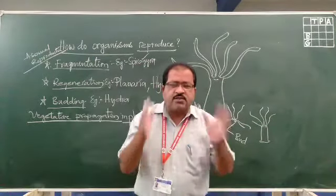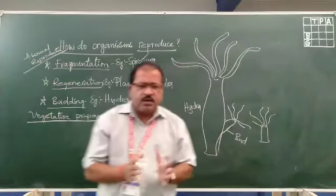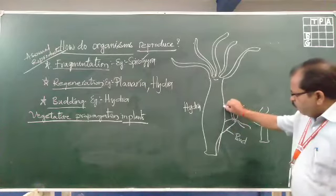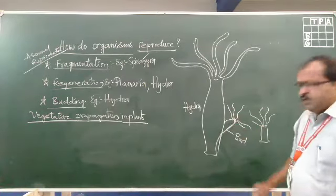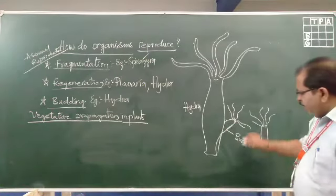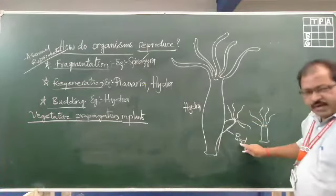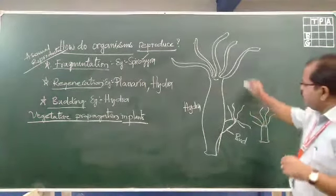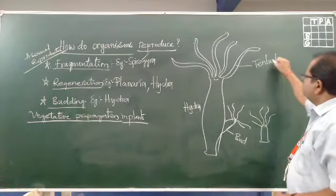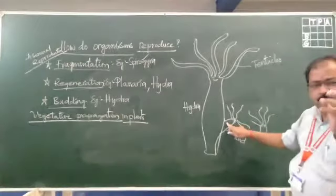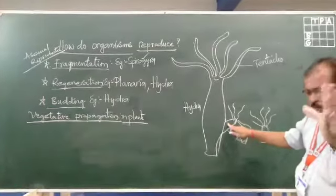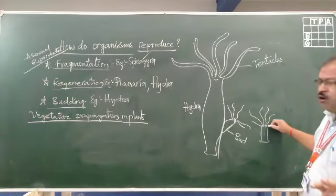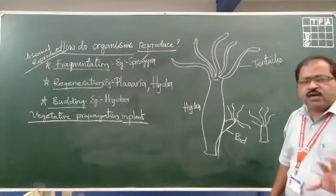This procedure is called budding. In hydra, from the body margins, bulb-like structures called buds are grown. These develop hair-like projections called tentacles. Once the bud is completely grown, it will detach by itself from the mother body and grow as a new individual. This process is called budding. Hydra is the best example for budding.